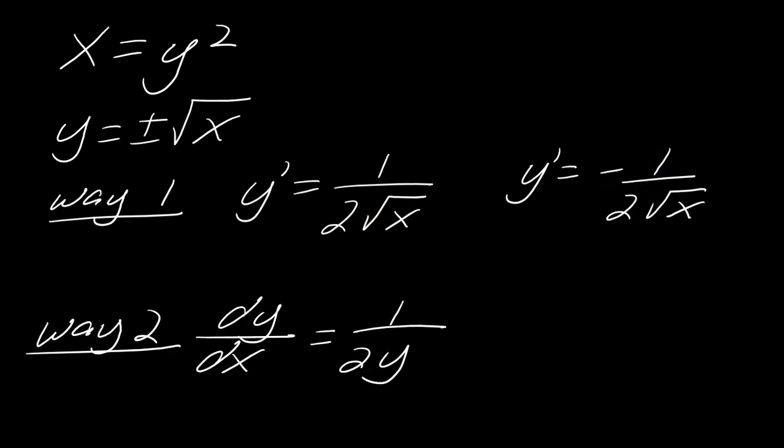Then in this second method, I found dy dx. And remember, dy dx and y prime, those mean the same thing, right? But I found dy dx equals 1 over 2y. How are these two things the same? They're like totally different letters.